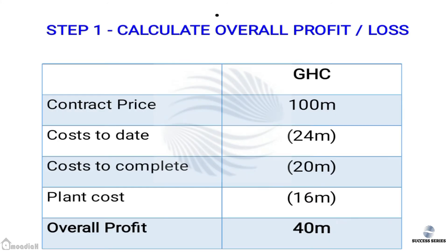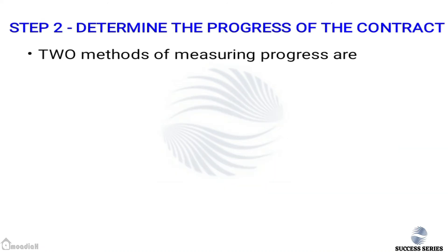Step one: calculate overall profit or loss. Contract price is 100 million, cost to date is 24 million, cost to complete is 20 million. The plant cost of 60 million also forms part of our costs — it can be represented separately or added to cost to date. Subtracting all costs from the contract price gives us a raw profit of 40 million.